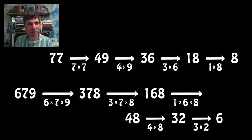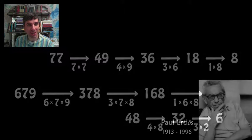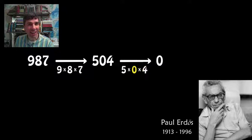Paul Erdős, the most published mathematician in history, also loved to tinker with multiplicative persistence. And he had an idea.